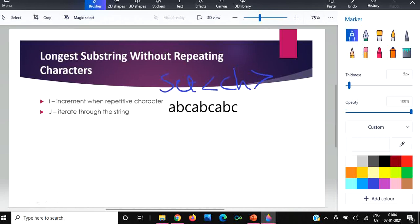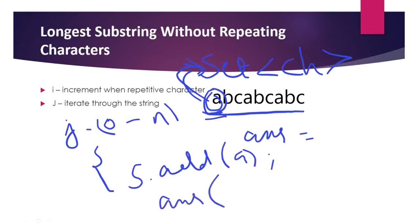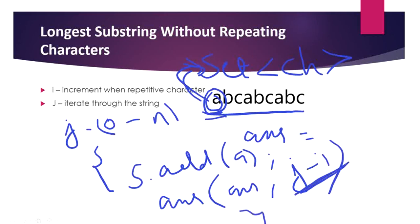We have two pointers i and j. j iterates the loop from zero to the length of the string. Inside the loop, it checks every time whether the character is present in the set or not. If the character is not present, it adds it to the set and calculates the answer as the maximum of the current answer and j minus i. If the character is present, then i is incremented.